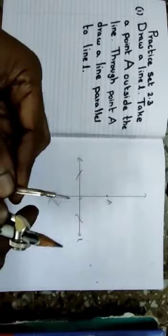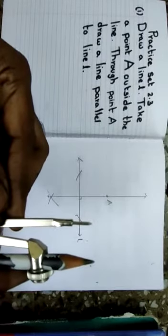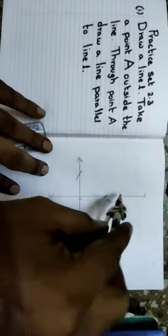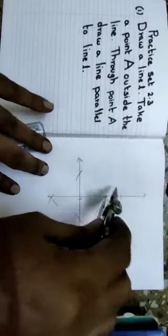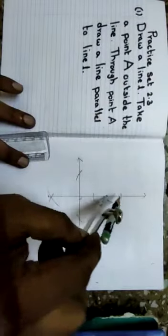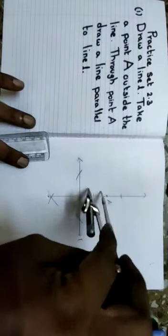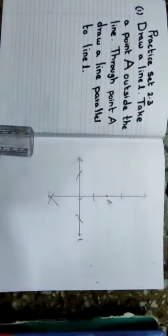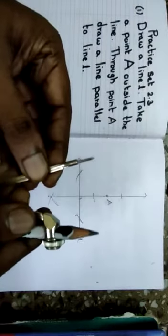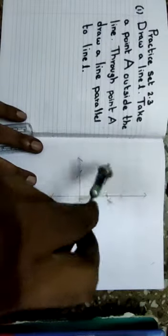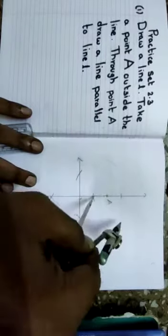Take your compass once again. Now take a little less distance — make it small. Keep the pointer at A. Draw one arc here up, and the same way, one arc down. Once again: keep the pointer at A, draw one arc up and draw one arc down. From here, draw one arc here and draw another.